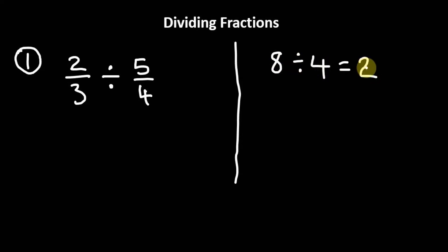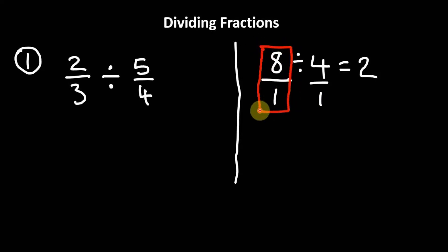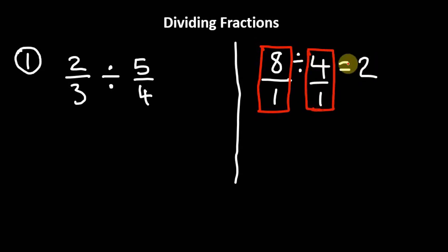So 4 can go into 8 twice, or 2 times. Now we can also write 8 as a fraction in the form 8 divided by 1, which is the same thing as 8, because 1 goes into 8 eight times — so we haven't changed the value. We can also write 4 as 4 divided by 1. So this is really 8 divided by 4, and we know that gives us 2.